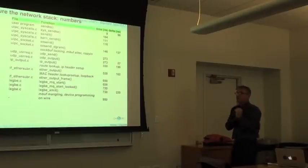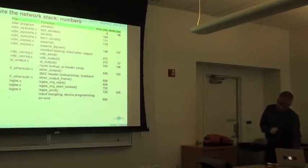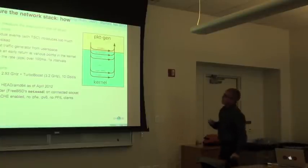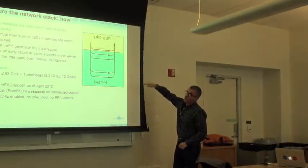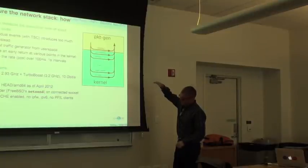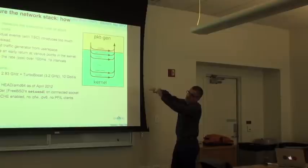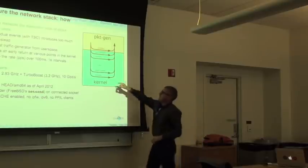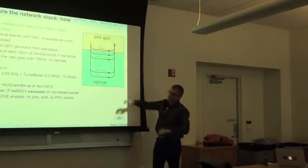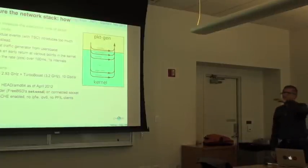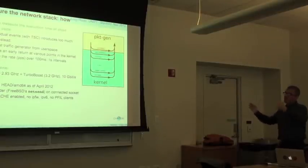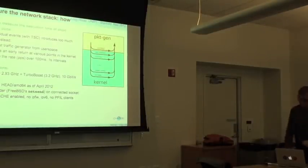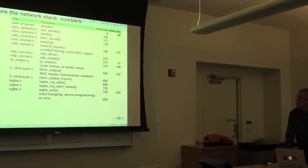To clarify how we measured: I modified the kernel sources so that right before a function call — for example, right before the call to IP output — I return instead of calling that function. I don't need to collect timestamps on every packet. I just run the measurement for one second, see how many packets are transmitted, and take the reciprocal. This avoids the overhead of per-packet timestamp collection.